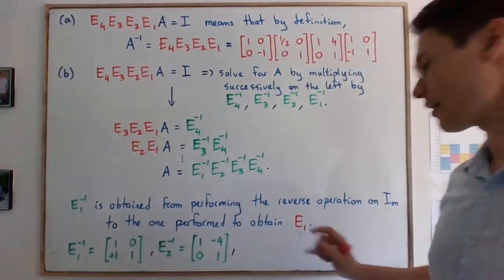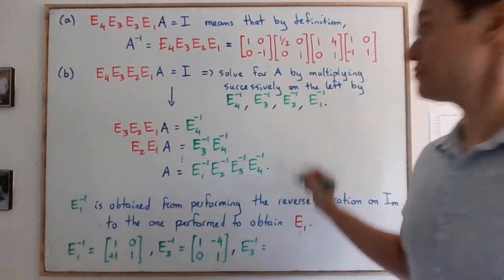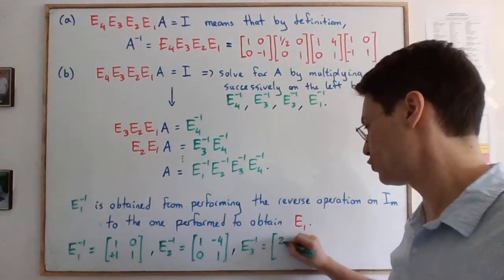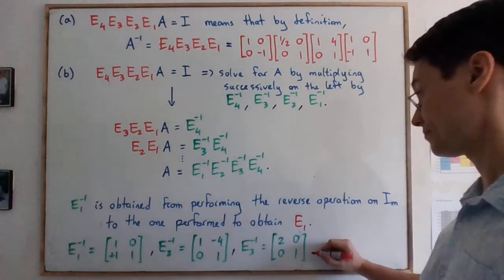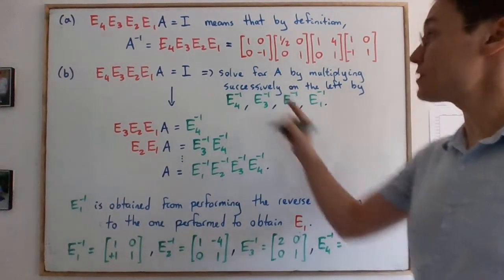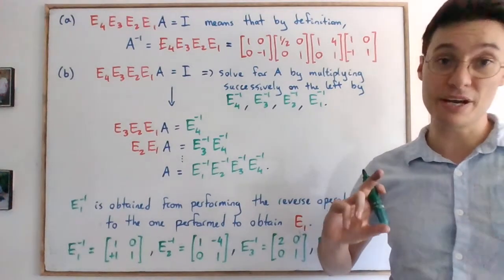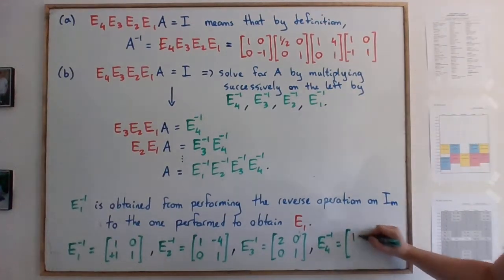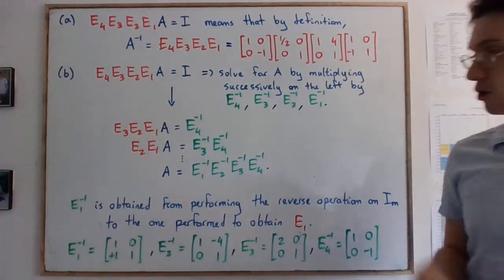Okay. E3 and E4 are kind of easier to visualize. The reverse of dividing the first row by 2 is obviously to multiply the first row by 2. So, we're going to get 2, 0, 0, 1. And finally, the reverse of multiplying the second row by negative 1 is to multiply it also by negative 1 because it's going to put it back to what it was before. So, here we go. The inverse of E4 is actually the same thing as E4 itself, I mean. So, here we are. Now, we can write the answer for A.